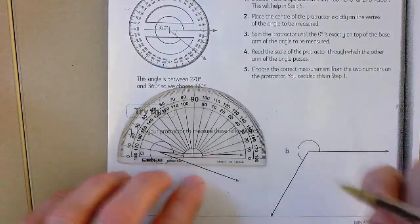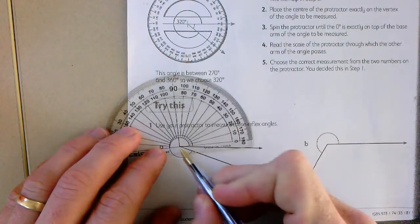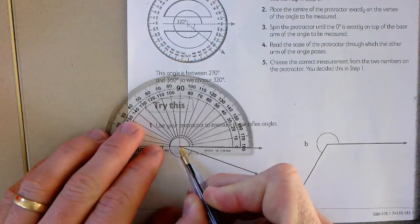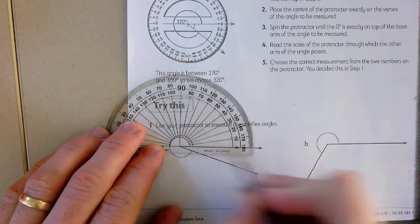So when we're using our protractor, because our protractor only goes to 180 degrees, we need to line up the T on the vertex of the angle and swivel our baseline until it lines up with the ray.